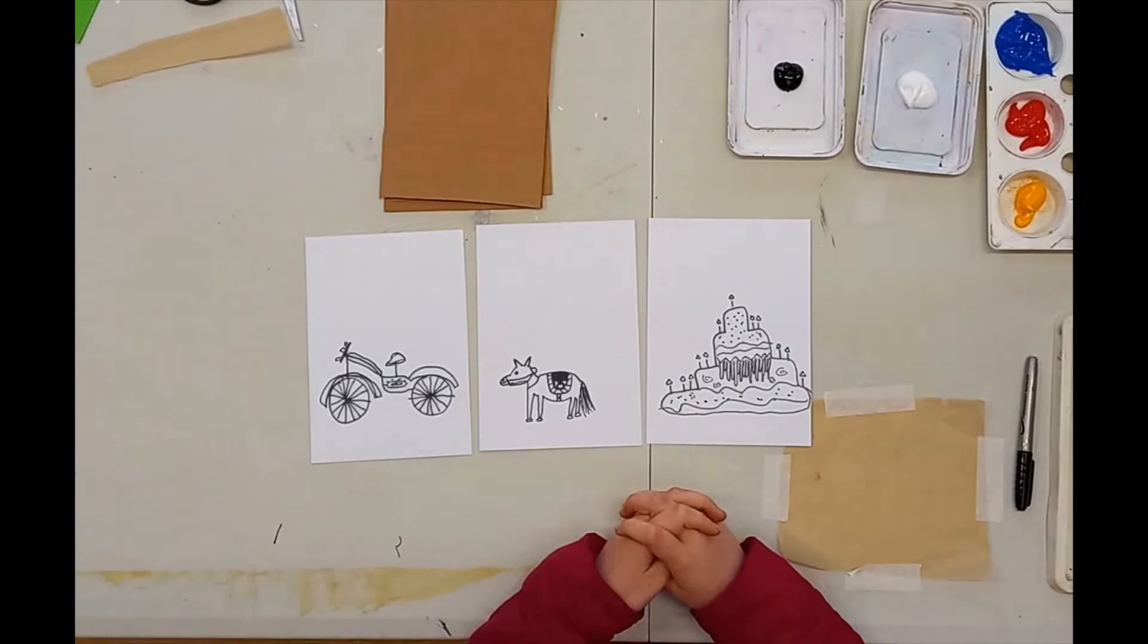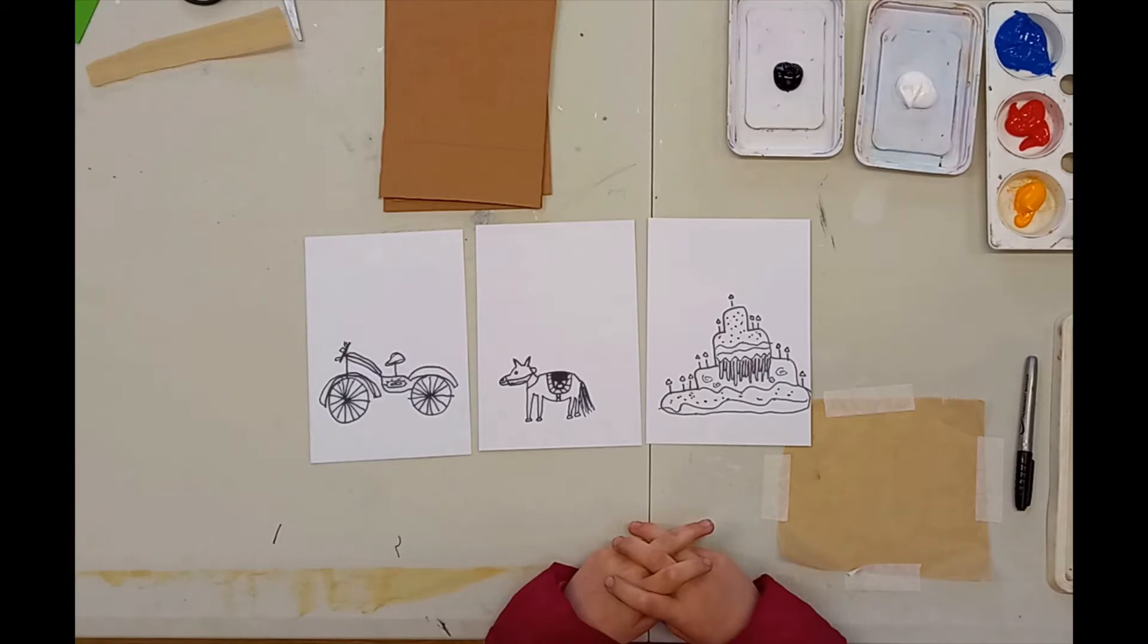Great drawing Rosa! So Rosa has drawn three different pictures: bicycle, horse, and her birthday cake. Now she's going to have a go at drawing them on her panels.